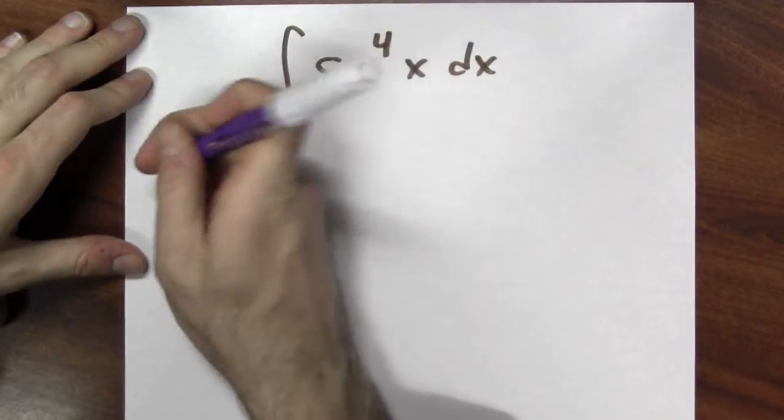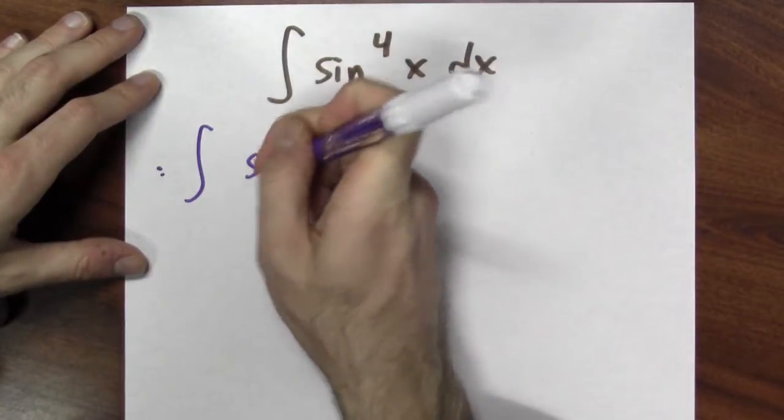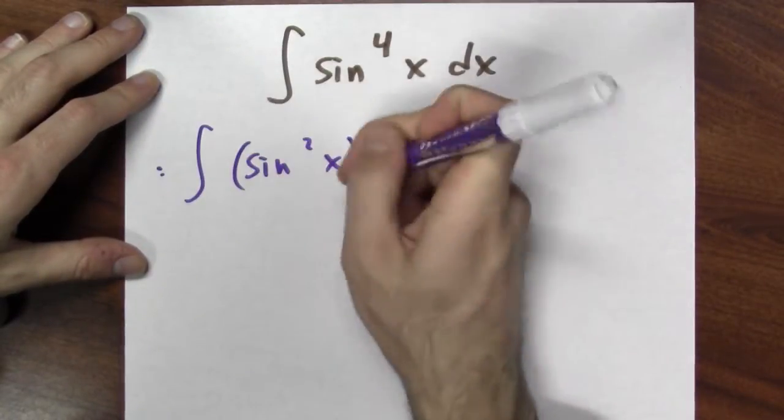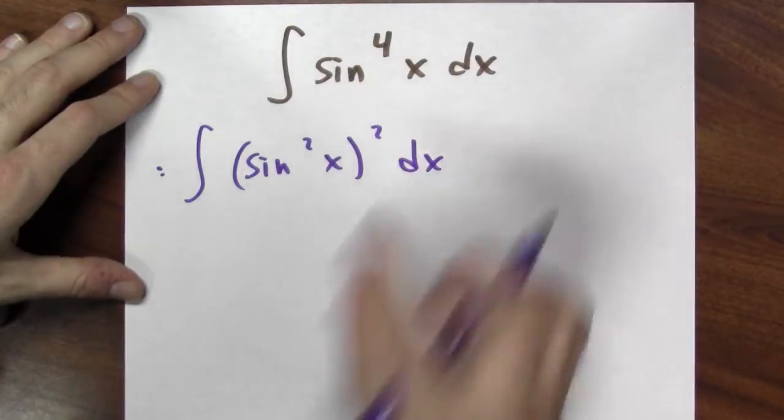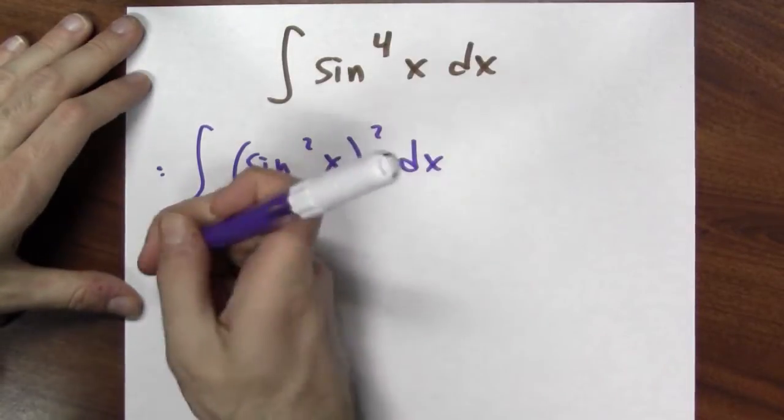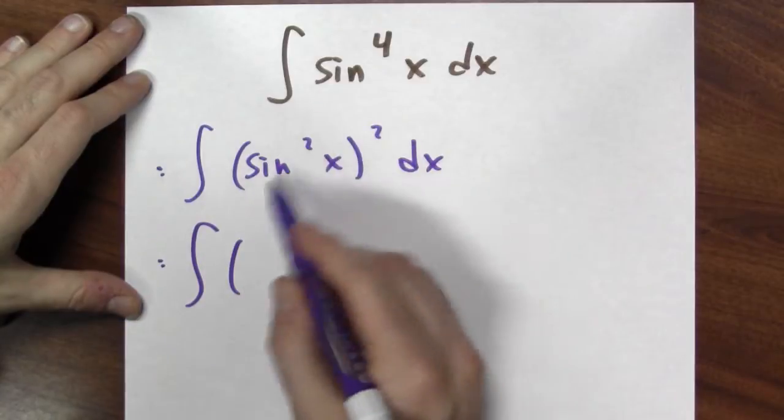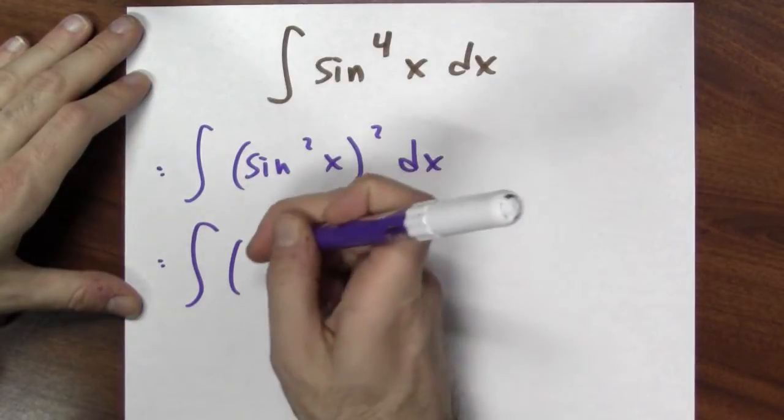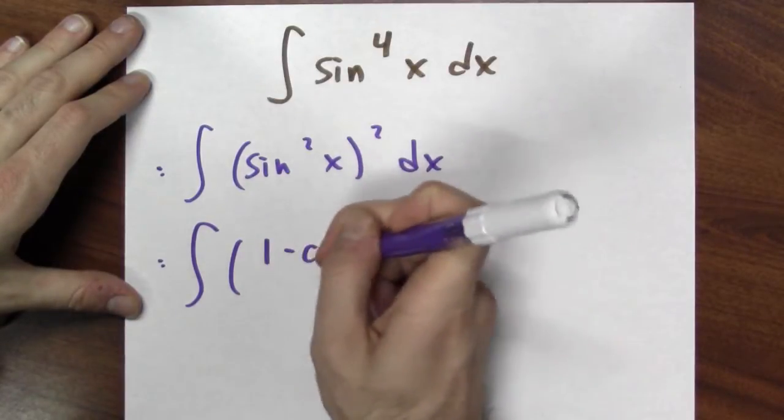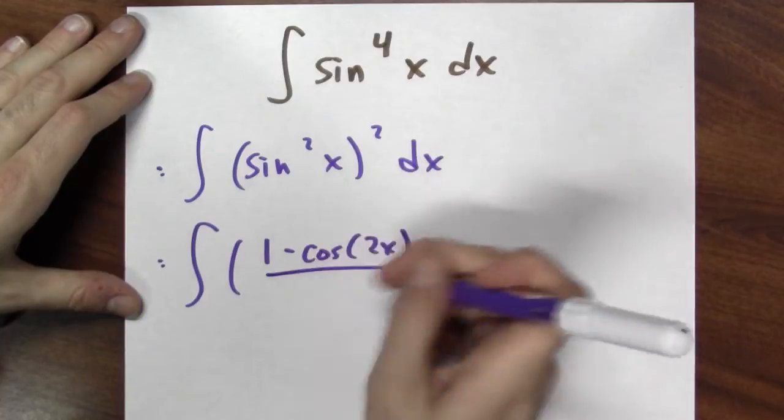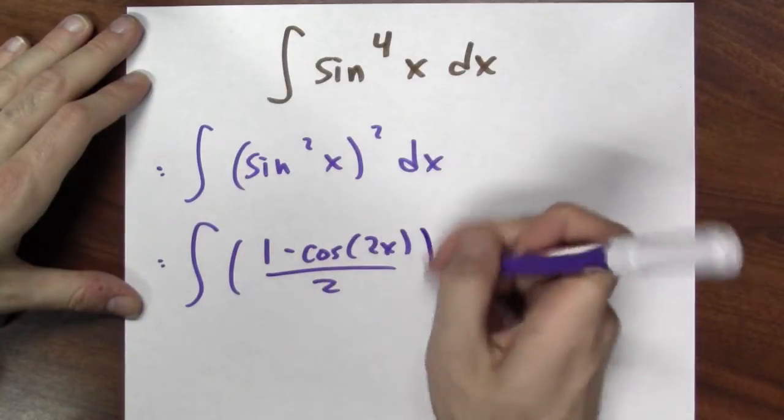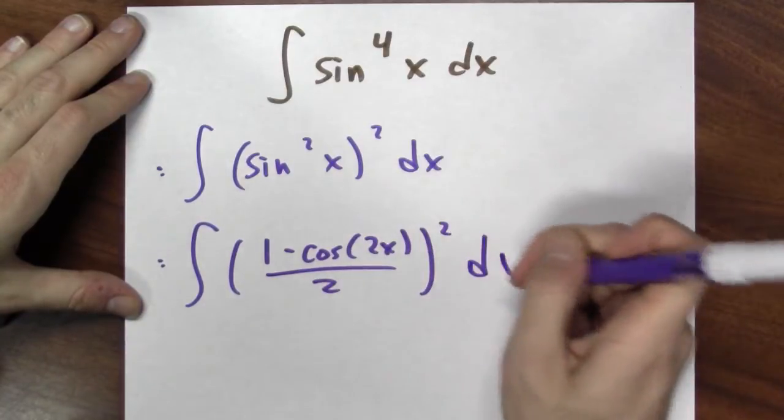Well, I can rewrite this integral as the integral of sine squared squared. And now I can use this half angle identity. This is the same as the integral, well, what's sine squared? Sine squared is 1 minus cosine 2x over 2, right? These are equal. And I still have to square that dx.